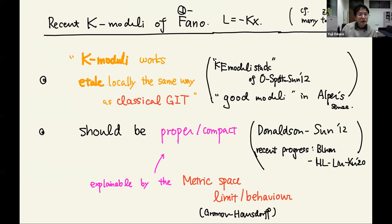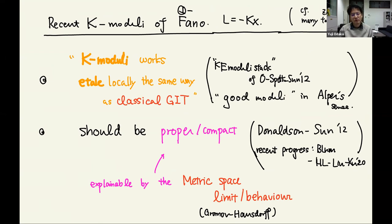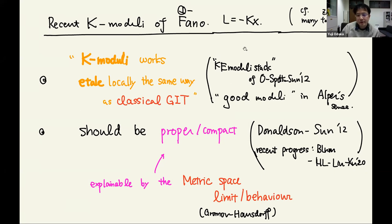In the recent Fano case — more precisely the anti-canonically polarized case — k-moduli works more or less the same as classical GIT, but only étale locally. We cannot directly apply GIT; there is a natural line bundle called the CM line bundle, which is not necessarily ample on the whole Hilbert scheme. But as a result we have a coarse moduli, and it is étale locally the same as classical GIT. The formulation is now called a good moduli space in the Alper framework. One good thing of this moduli story is that this should be proper — compact — from differential geometric reasoning.